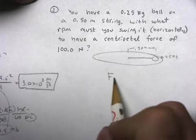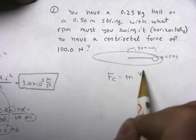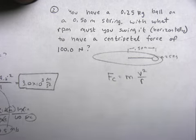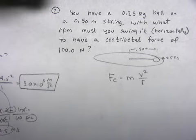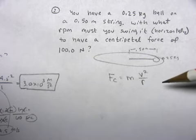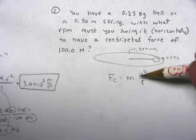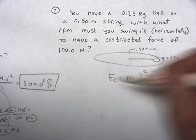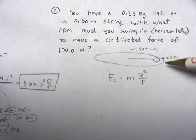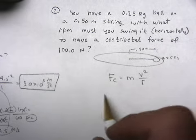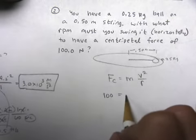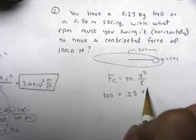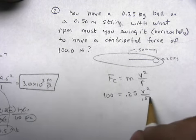So the centripetal force is the mass times the velocity squared over the radius. What I'm going to do is find the velocity first, and then I'll change that into rotations per minute. I know that the centripetal force is supposed to be 100, the mass is 0.25, and the radius is 0.5.